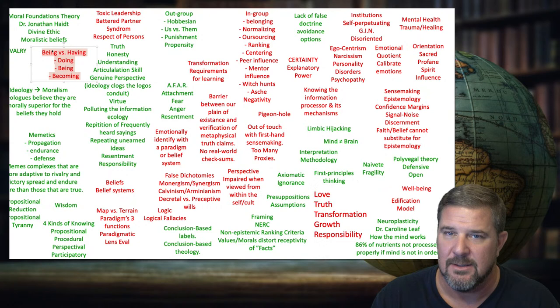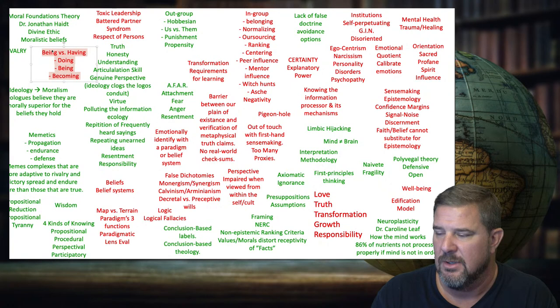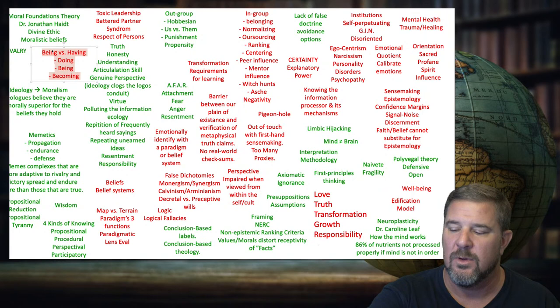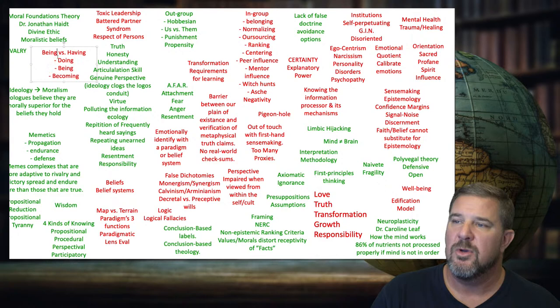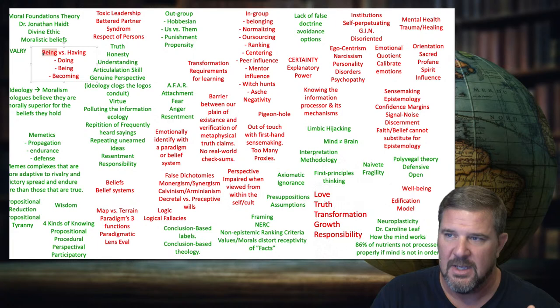This is the same problem with families — one reason divorces happen is that spouses have each other in having mode: 'I have a wife,' rather than 'I am being a husband' and interacting reciprocally. When you're focused on being, you stop focusing on the words themselves and focus more on the process of interacting with the words of scripture.